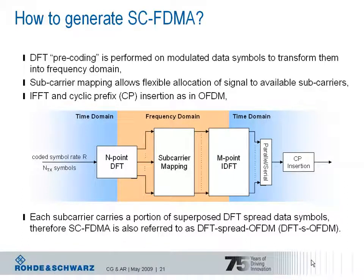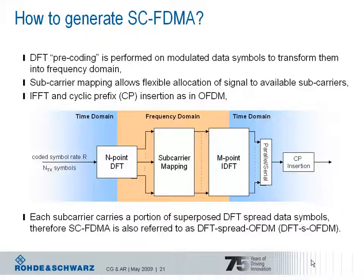The DFT precoding is the essential difference between downlink and uplink. It is a mathematical operation, but compared to OFDM in the downlink — where each subcarrier carries just one specific modulation symbol — the DFT takes the symbol and spreads it over the available subcarriers. In that way, each subcarrier carries a portion of superposed symbols. Therefore, single carrier FDMA is also referred to as DFT-spread OFDM.